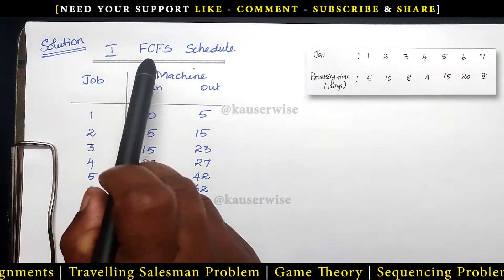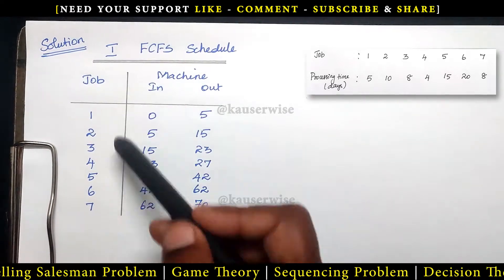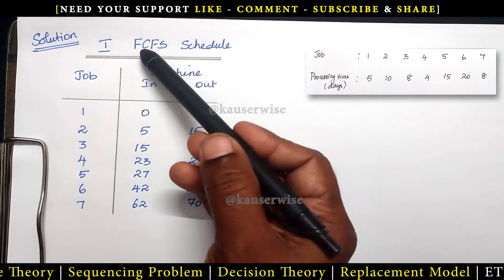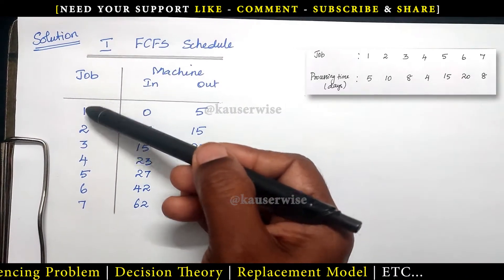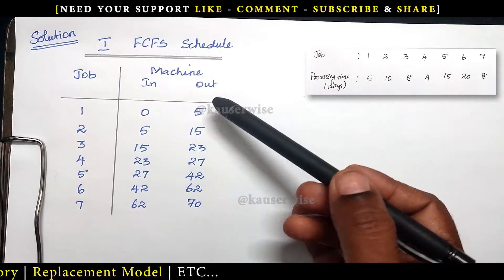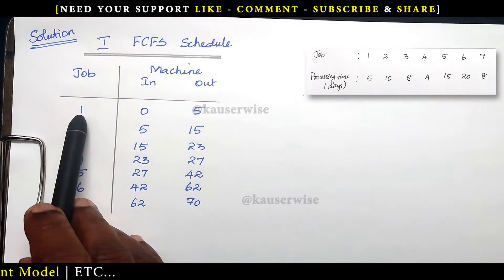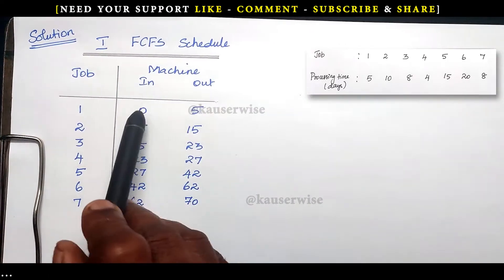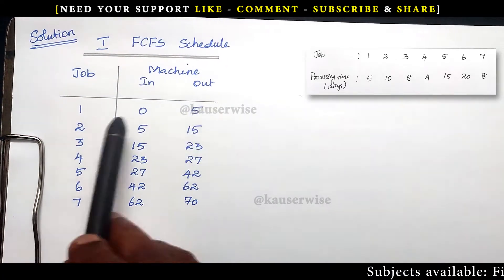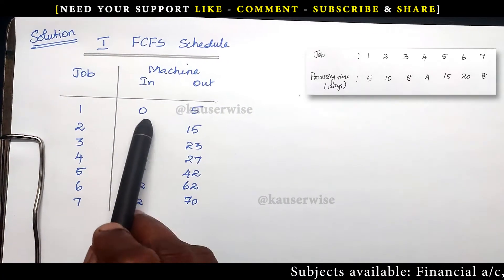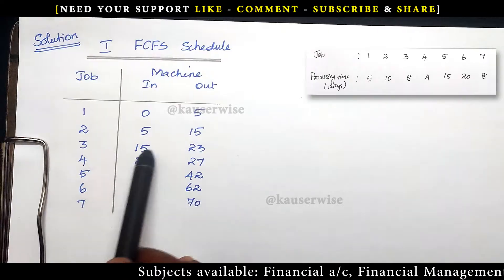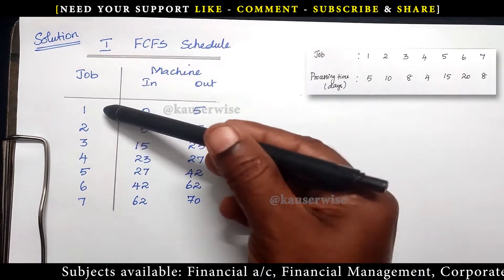According to the first come first served schedule, we have to consider the order as it is: 1, 2, 3, 4, 5, 6, 7. For in time and out time, just take the processing time. For the first job, processing time is 5 days, so in time is 0 and out time is 5. For the second job, after completion of the first job, the machine will take up the second job. In time is day 5 and processing time is 10 days, so 5 plus 10 equals 15. Like that, you can find out the in time and out time for all 7 jobs.